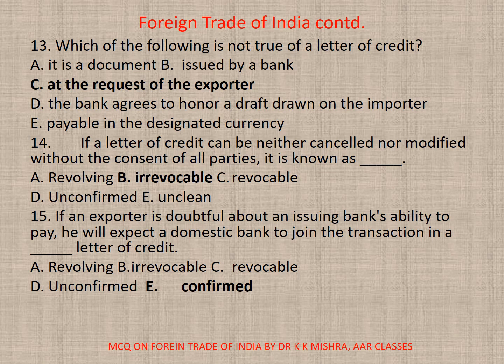Question 15: If an exporter is doubtful about an issuing bank's ability to pay, he will expect a domestic bank to join the transaction in a dash letter of credit. Options: A. Revolving, B. Irrevocable, C. Irrevocable, D. Unconfirmed, E. Confirmed. The correct option is E — Confirmed.